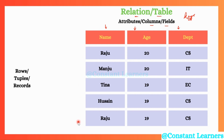What we are seeing on the screen is a student's table. It has three columns, namely name, age, and department. Each row stores data about one student.